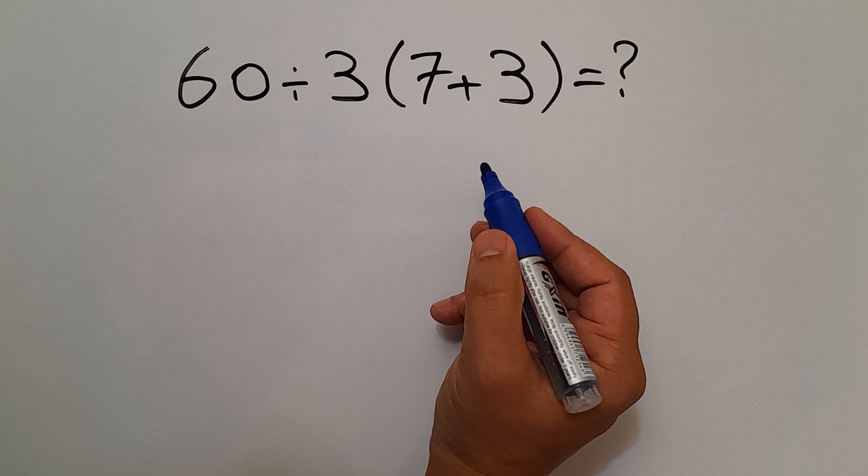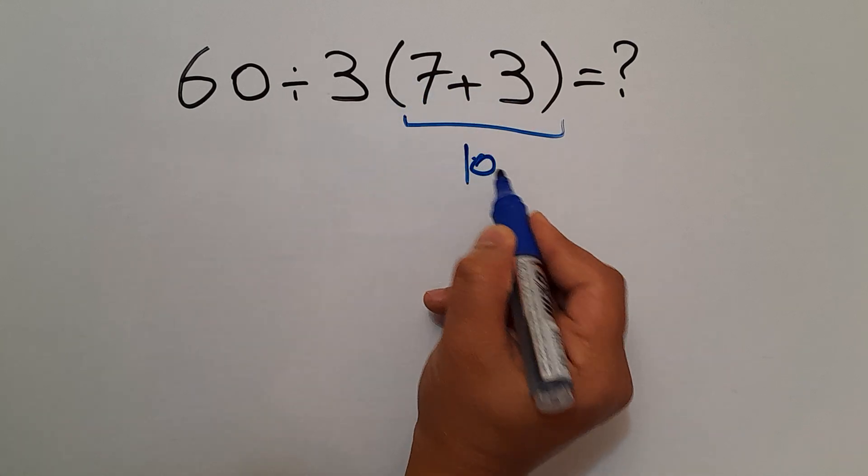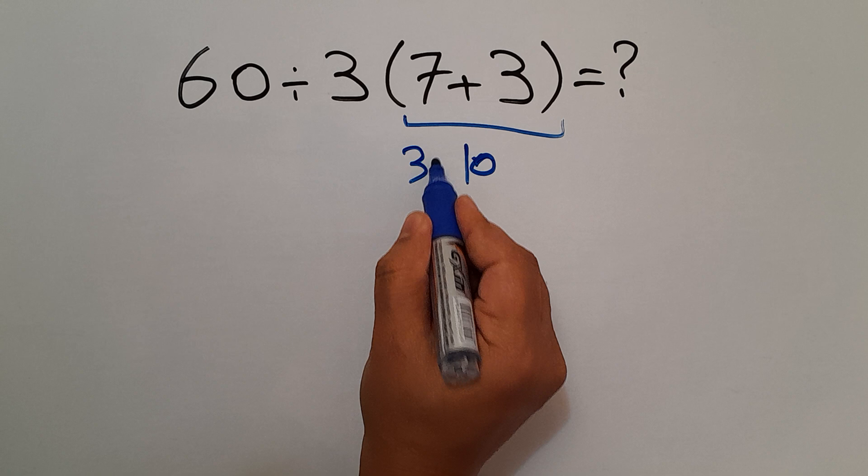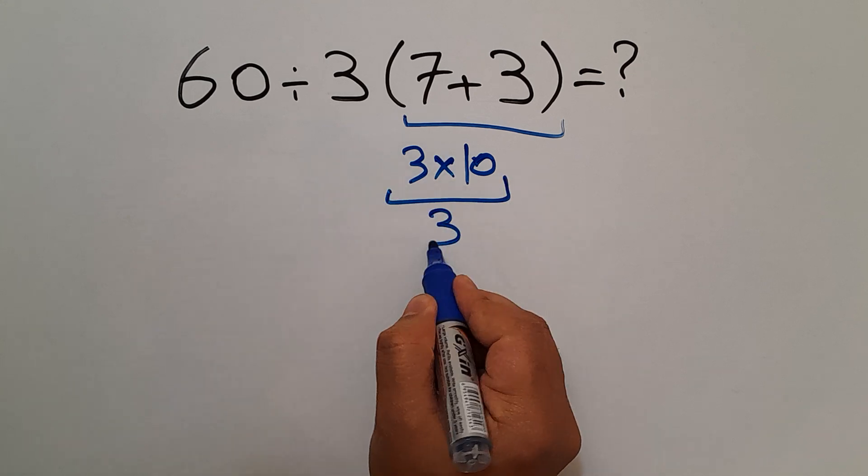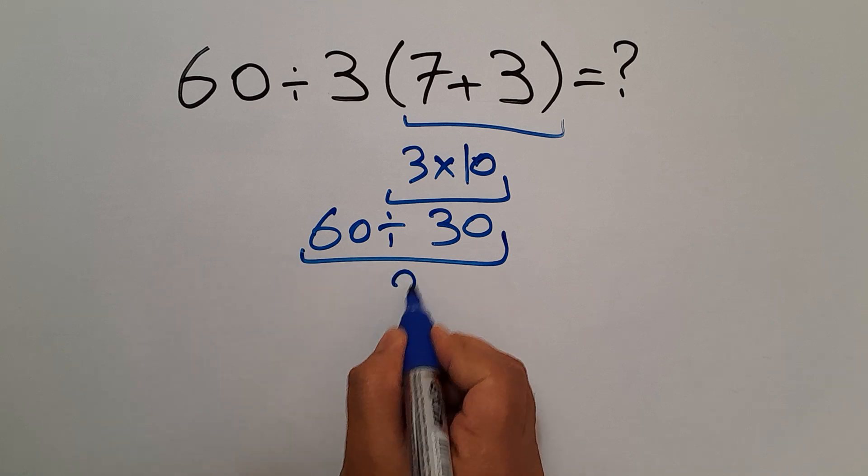Are you ready to solve? Let's go ahead and get started. 7 plus 3 gives us 10 and we have here 3 times 10 which equals 30, and 60 divided by 30 gives us 2.